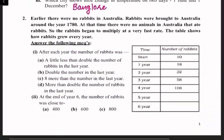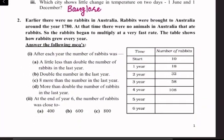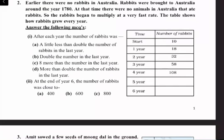Question number two: earlier there were no rabbits in Australia. Rabbits were brought to Australia around the year 1780. At that time there were no animals in Australia that ate rabbits, so the rabbits began to multiply at a very fast rate. The table shows how rabbits grew every year. Answer the following MCQs.